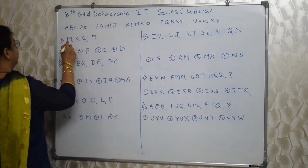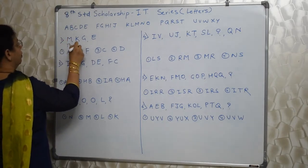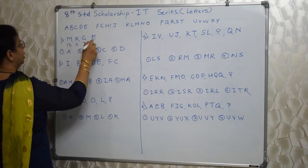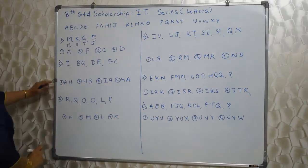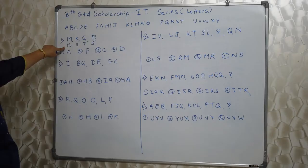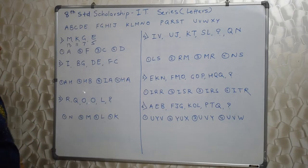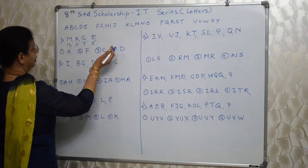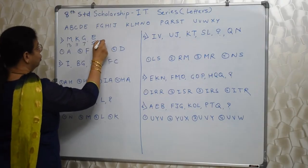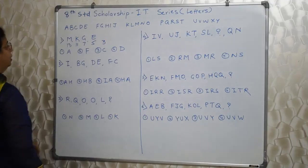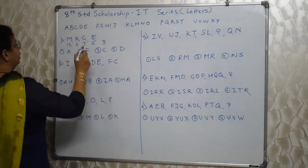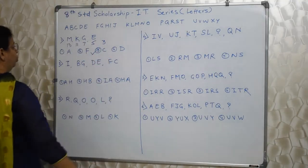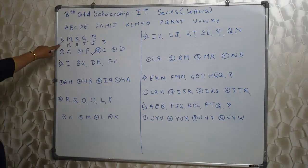Now first thing is we have to give their respective serial numbers. M is 13, K is 11, G is 7, E is 5. Students who know the prime numbers, they will immediately know 13, 11, 7, 5 are prime numbers in descending order. So the next prime number is 3, which letter has serial number 3? That is C. So option 3 is correct. It was based on prime numbers.